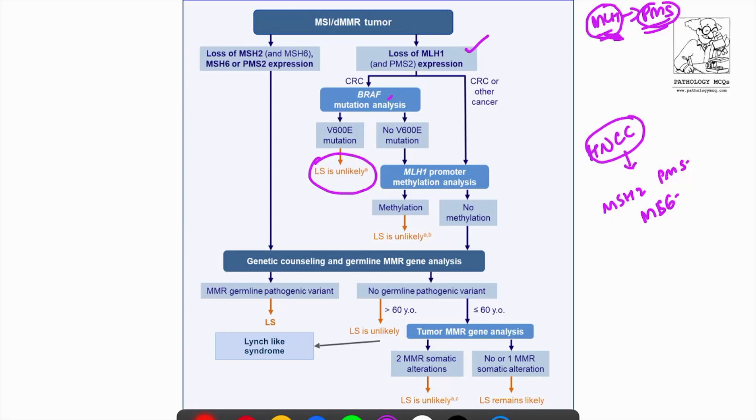Usually MLH1 is the least common gene involved in hereditary syndromes like Lynch syndrome. So when you see that MLH1 and PMS2 is lost, the next best step is to do a BRAF mutation analysis because this is less likely to be a Lynch syndrome or hereditary syndrome. Instead, it could be a sporadic condition which we are dealing with. In sporadic cases, the next best step to do is BRAF analysis. If BRAF mutation is present, then Lynch syndrome is unlikely. This is definitely a sporadic case and treatment can be given accordingly.